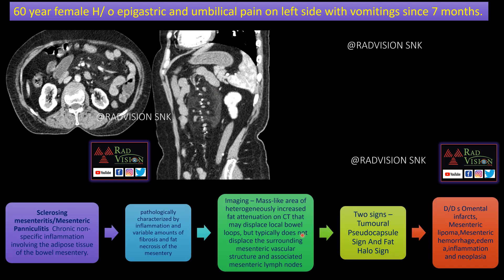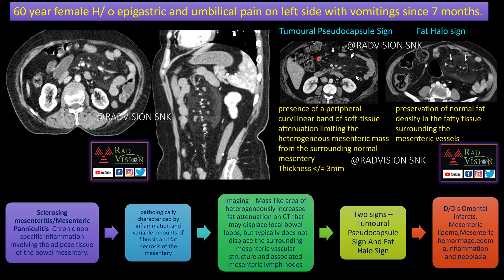In mesenteric panniculitis, there are two typical imaging signs that help in differentiation. One is the tumoral pseudocapsule sign — a small curvilinear band of soft tissue density surrounding the increased fat density, with thickness less than or equal to 3 mm. The other is the fat halo sign — preserved fat around the mesenteric vessels within the increased fat density. These two signs help differentiate mesenteric panniculitis from omental infarcts, mesenteric lipoma, hemorrhage, edema, or neoplasms. The tumoral pseudocapsule sign and fat halo sign are pathognomonic for mesenteric panniculitis.